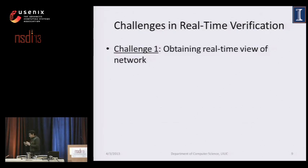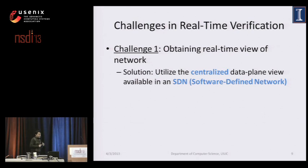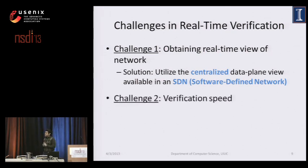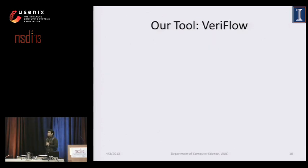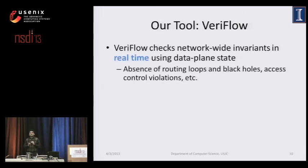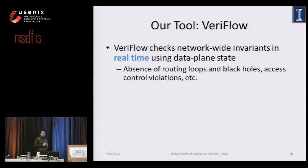There are some challenges in real-time verification. The first is obtaining a real-time view of the network — SDNs help here due to the centralized view of the data plane state available at the centralized controller. The next challenge is verification speed, and unfortunately off-the-shelf techniques are not fast enough. This brings us to our tool VeriFlow, capable of running network-wide invariant checks in an SDN in real time, checking key network invariants such as routing loops, black holes, and violations of access control policies, and also allowing custom invariant query algorithms.